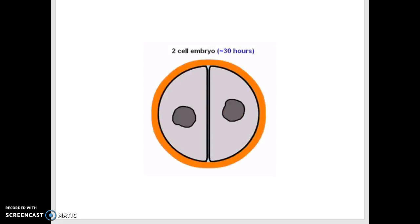As the zygote passes through the fallopian tube on its way to the uterus, it goes through mitotic division, though skipping the G1 and G2 phase of division. This division of the zygote results in two daughter cells known as blastomeres. The entire division results in a two-cell embryo occurring within 30 hours of fertilization.